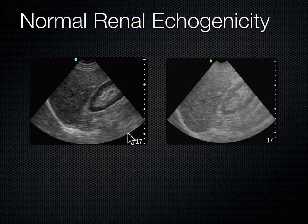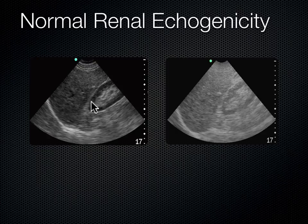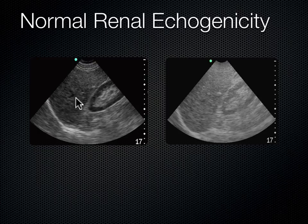Looking at these two images: they have the same depth, both ranging down to 17 centimeters, but the difference is the gain. The right image is over-gained — pretty washed out. The left image is properly gained. You can see the cortex of the kidney is slightly darker, less echogenic, than the liver. If you can make out those subtleties, you've got your gain adjusted just right. That's the art of gain.